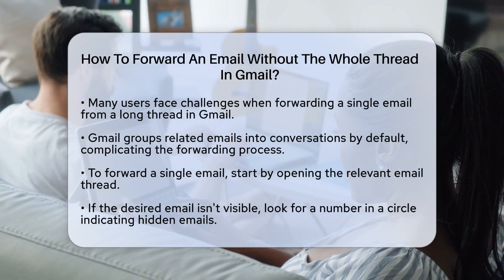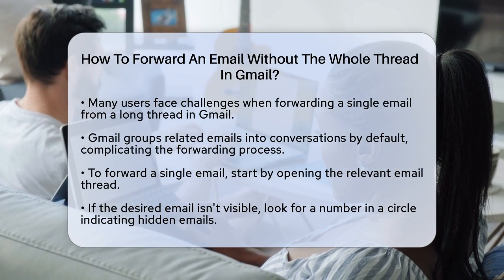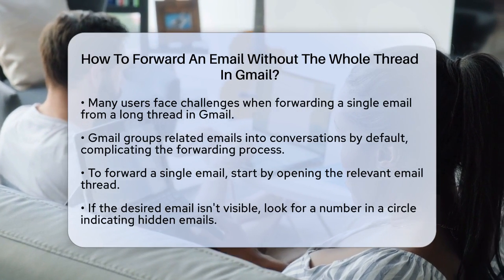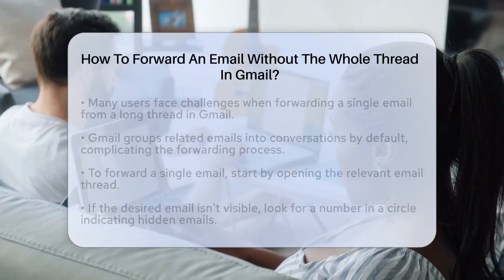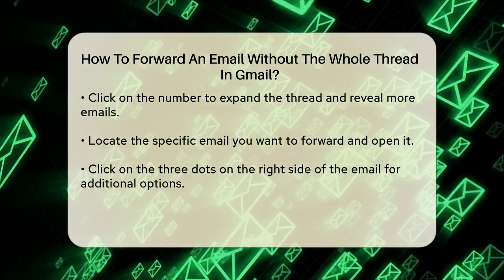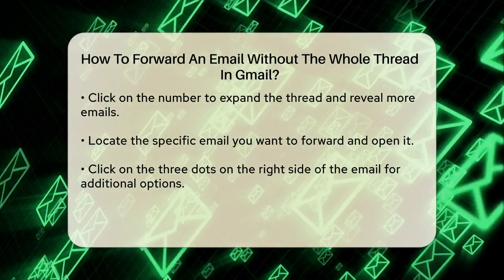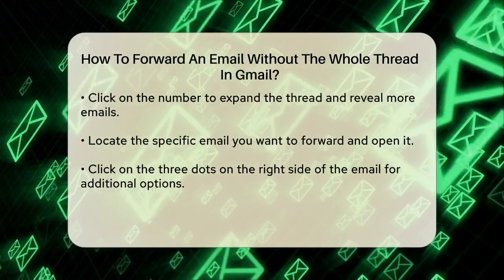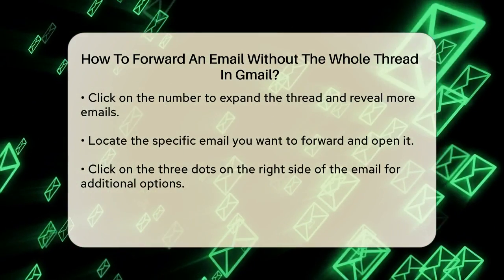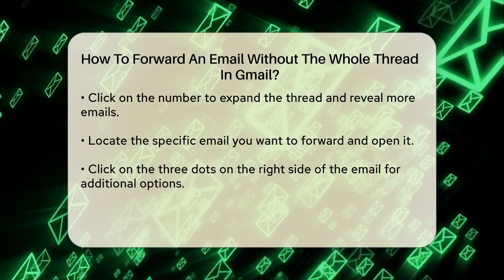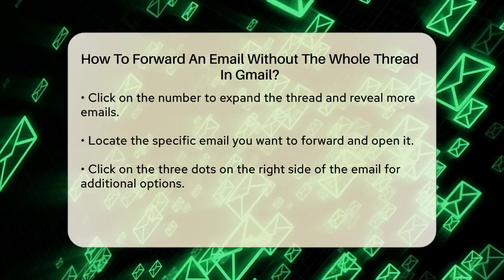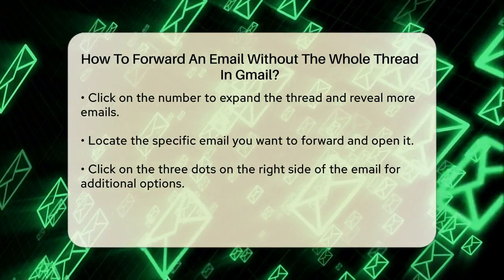Here's what you can do. To forward a single email, you need to navigate through the thread carefully. Start by opening the email thread that contains the message you want to forward. If the email you want to forward isn't immediately visible, look for a number in a circle between the original and the last emails in the thread. This number indicates how many emails are not displayed yet. Click on this number to expand the thread.